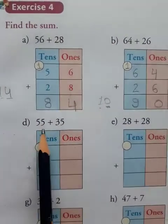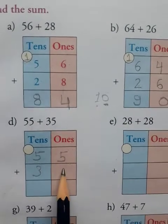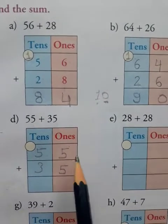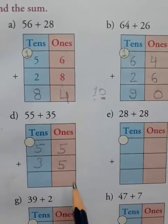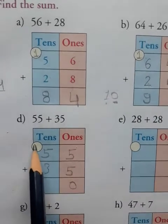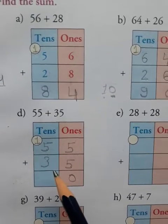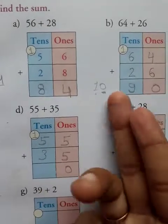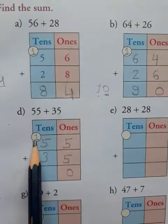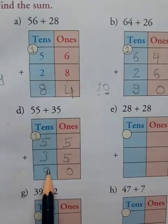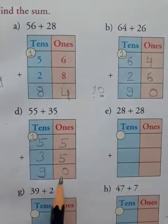Next is 55 plus 35. Write 55 and 35. First of all, you add the ones: 5 plus 5 is equal to 10. So you write 0 here and carry over 1 to the tens place. Now, 5 plus 3 is equal to 8. You also add the carry over: 8 plus 1 is equal to 9. So you write 9. It means 55 plus 35 is equal to 90.